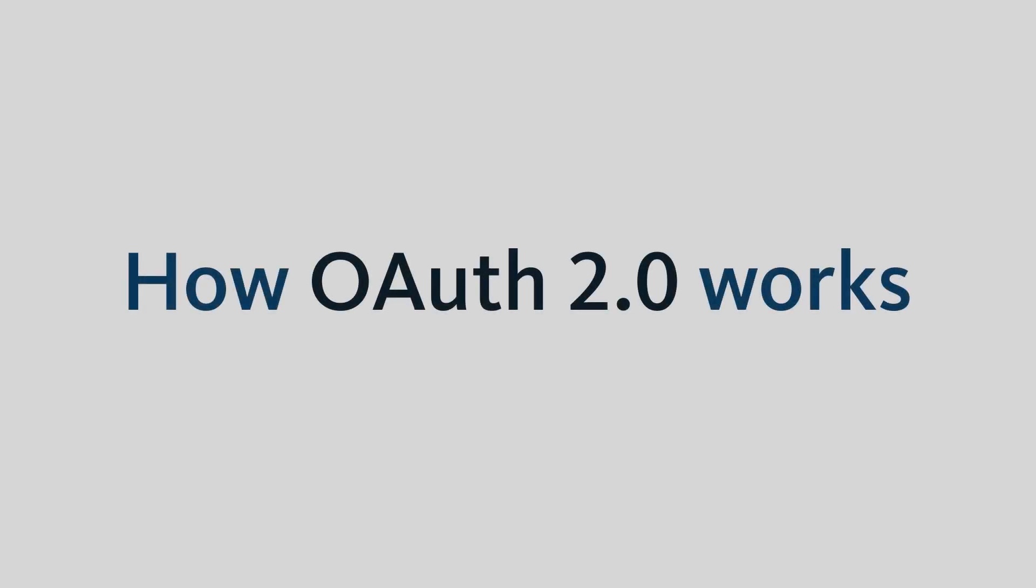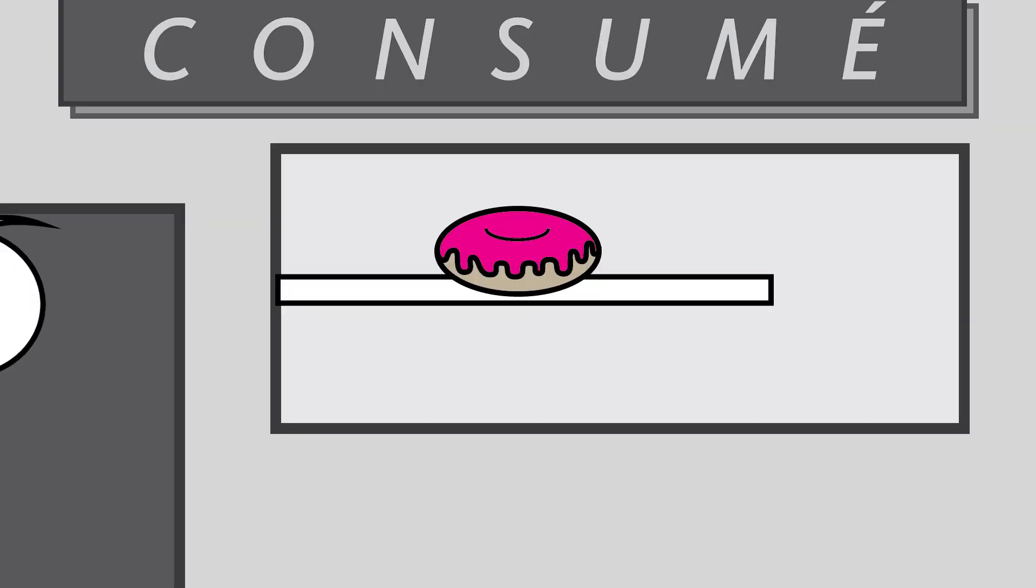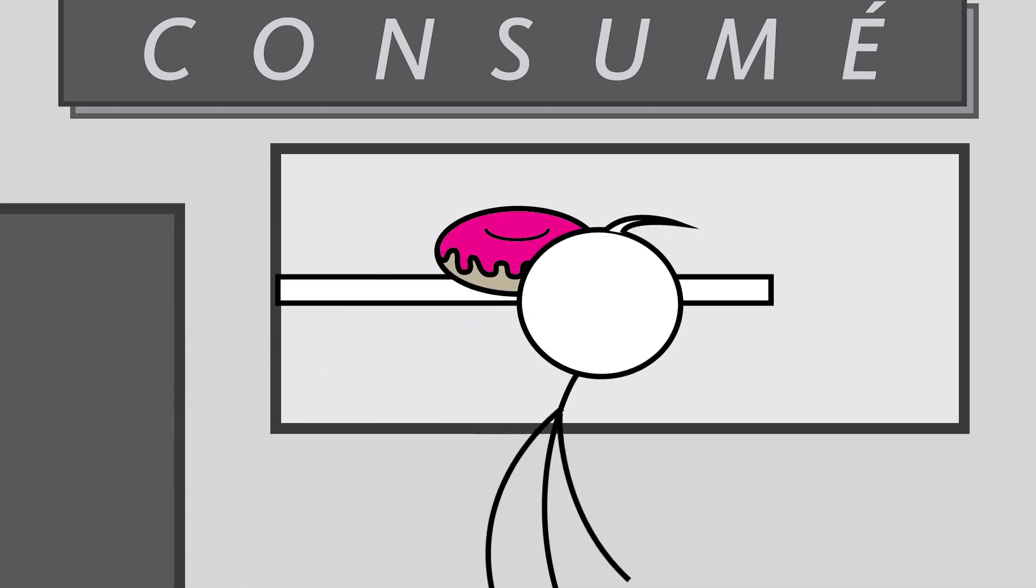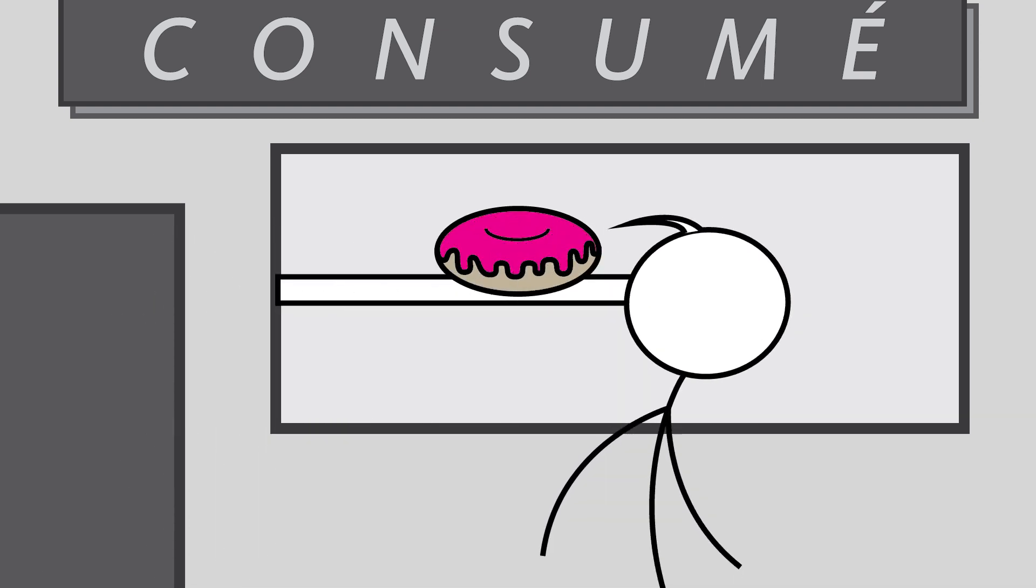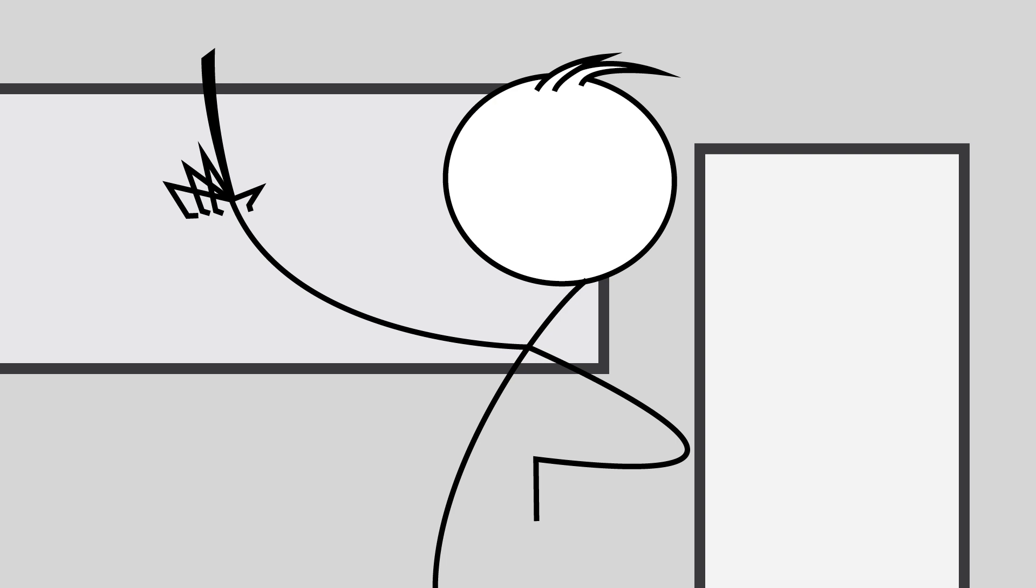How OAuth 2.0 works. I saw the most delicious donut in the window of a new local bakery, Consume. So I went inside and demanded, I must have that donut.